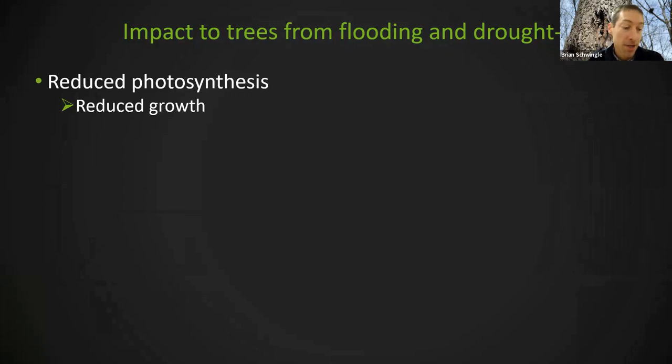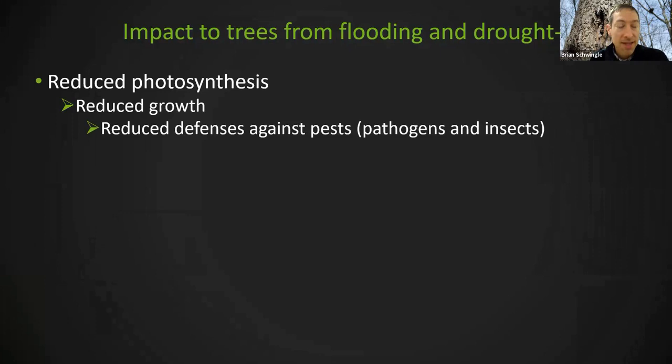So what are the general impacts to trees from both flooding and drought? You get reduced photosynthesis — the process by which plants make their food from sunlight and carbon dioxide. If they can't do that as much, they have reduced growth. And if they have reduced growth, they basically shut off production of their defensive compounds.